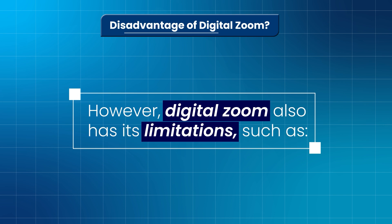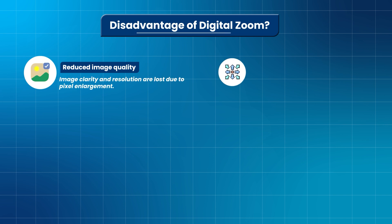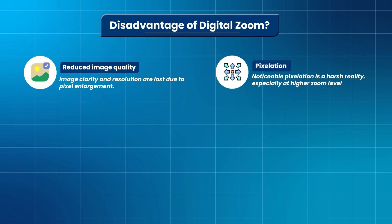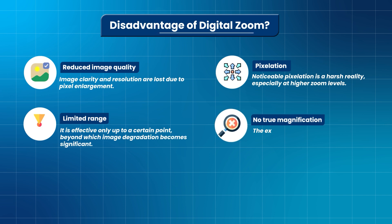However, digital zoom has its limitations. These include reduced image quality, as image clarity and resolution are lost due to pixel enlargement. Noticeable pixelation is a harsh reality, especially at higher zoom levels. There is also a limited effective range, beyond which image degradation becomes significant, and no true magnification — the existing image is simply enlarged, causing unavoidable quality compromises.